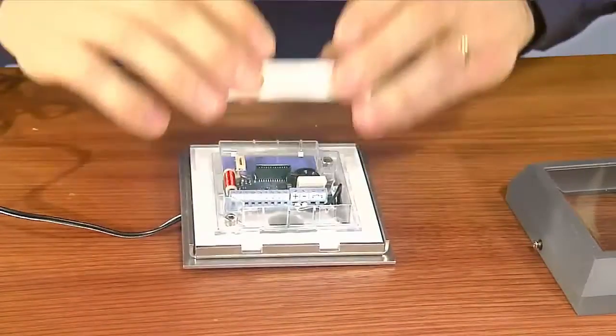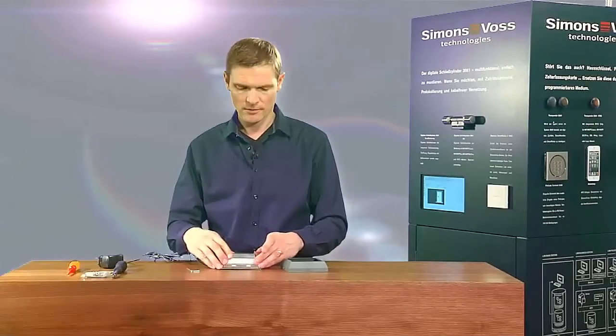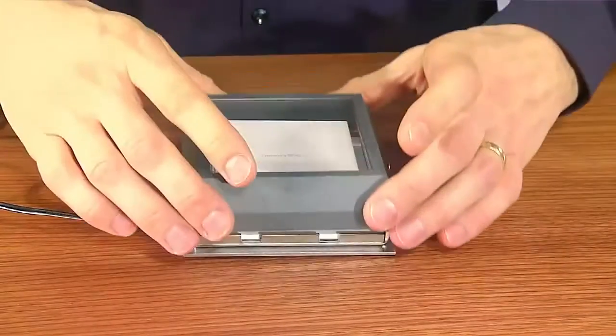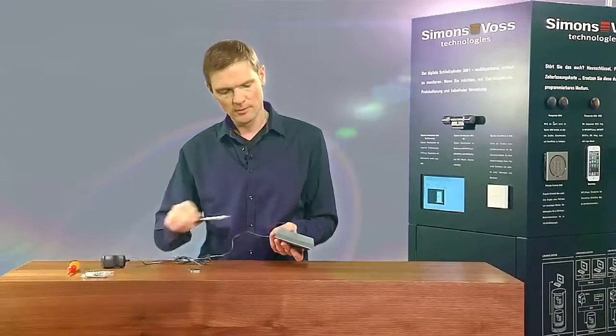The lid is then positioned onto the Smart Relay. The protective cover is placed over the Smart Relay and we then fasten the lid with the safety screws.